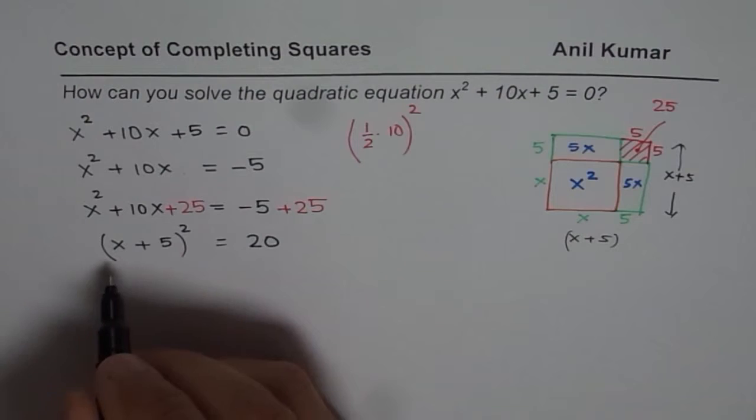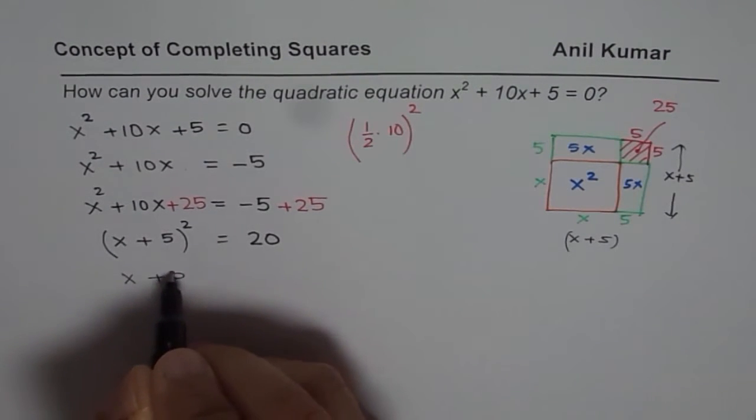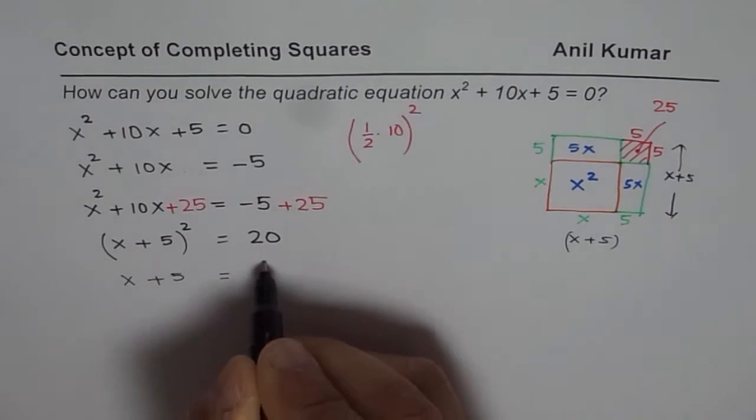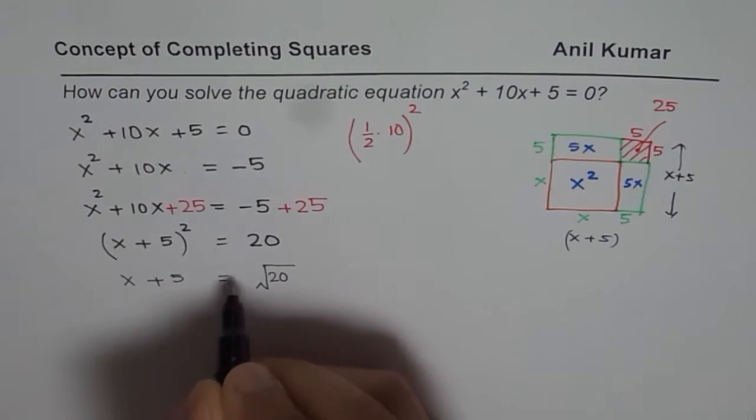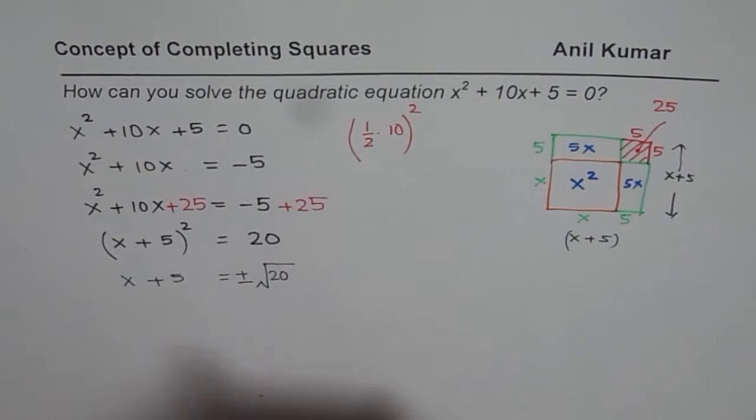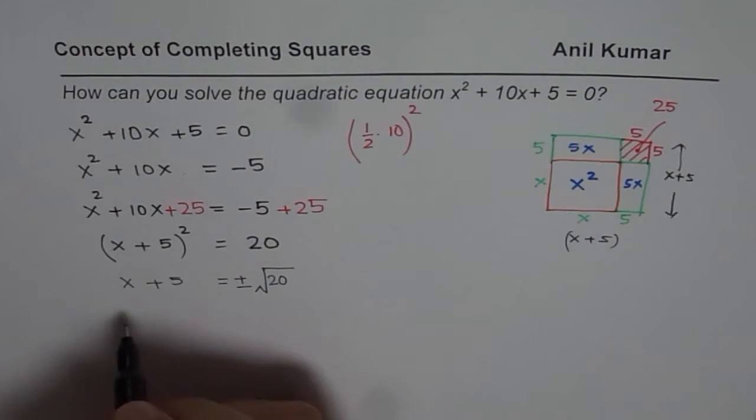Taking square roots, we get x + 5 = ±√20. Whenever you do square root, you have to write plus and minus, since both negative and positive when squared will give you positive. Rearranging, we get two solutions.